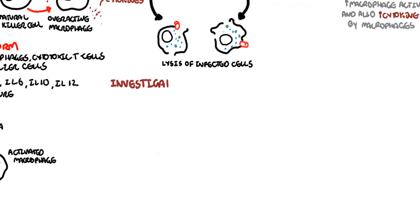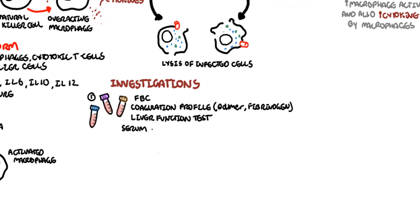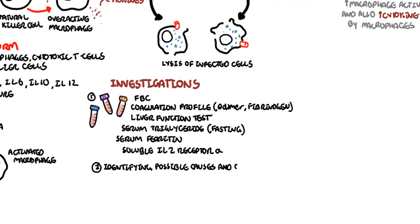Investigations for anyone suspected of hemophagocytic lymphohistiocytosis include blood tests of full blood count, coagulation profile, including D-dimer and fibrinogen, liver function tests, serum triglyceride, serum ferritin, which will both be high. There is soluble interleukin-2-receptor alpha. Important to identify the possible causes, as well as the complications associated with lymphohistiocytosis.